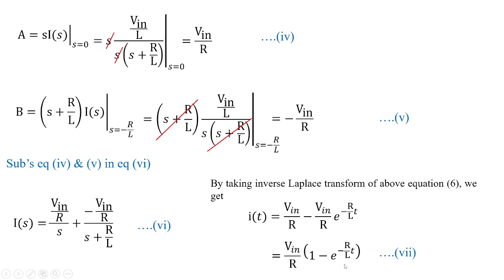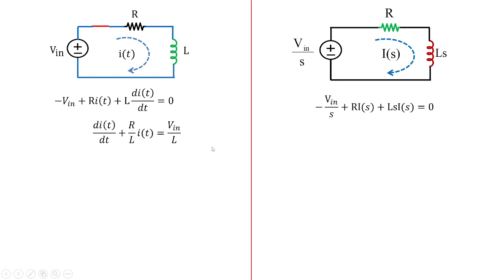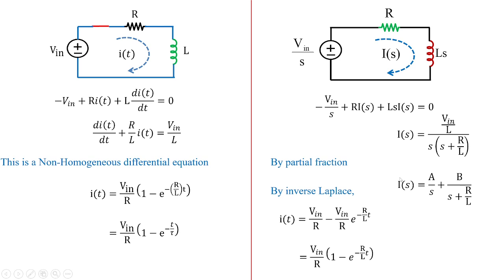Both the differential approach and the Laplace approach give the same answer: i(t) = Vin/R × (1 - e^(-t/τ)), an exponentially rising curve. To summarize: applying KVL leads to a non-homogeneous differential equation in the differential approach, and using partial fractions followed by inverse Laplace in the Laplace approach — both yield the same transient current expression.